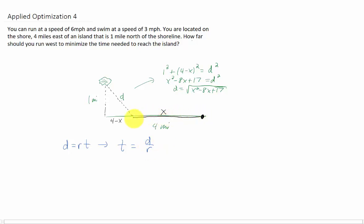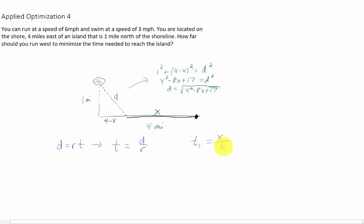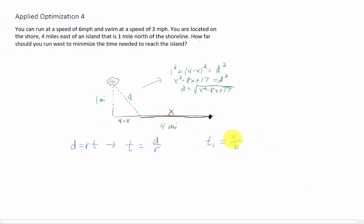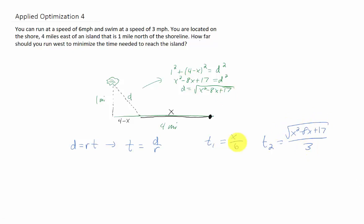We split this problem into two times. T1 is how long it takes to run down the shoreline: the distance you run is x and your rate is 6 miles per hour, so T1 equals x over 6. The swimming time T2 is whatever distance you swim divided by 3 — and we just found that the swim distance is the square root of x squared minus 8x plus 17 — so T2 equals that quantity divided by 3. The total time is f(x) = x/6 + √(x²−8x+17)/3.